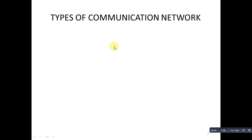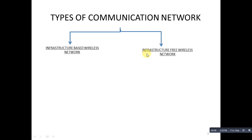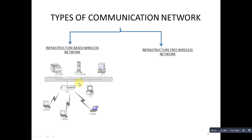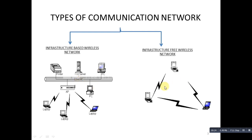In wireless networks, there are two types of network. One is Infrastructure Based Wireless Network and the other is Infrastructure Free Wireless Network. Infrastructure Based Wireless Network requires an access point and service set identifier; examples include networks used at home, business, and school. Infrastructure Free Wireless Network, also called an ad hoc network, does not require an access point. Even though its coverage area is limited, it can be used where wireless infrastructure is not possible, like military networks.